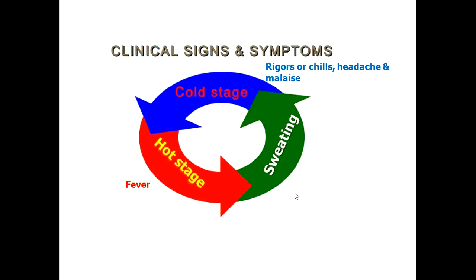The signs and symptoms of malaria occur in three stages. The first is the cold stage, in which the patient experiences rigors or chills — shivering with a feeling of cold — and some patients may have vomiting, cough, or diarrhea. This stage may last from 20 minutes to one hour. The hot stage involves fever and may last from one to four hours. The final stage is the sweating stage with profuse sweating, lasting from two to three hours.